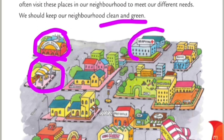Next hai hospital. Hospital hum jaate hai jab hum bimar hote hai, hume chot lagti hai. Hospital mein kya kya hota hai? Doctors hote hai, nurses hote hai, patients hote hai, compounders hote hai, sweepers hote hai — yeh sab hote hai. To yeh hospital ka picture hai.